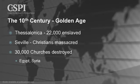We're still in the Golden Age — the 10th century. In Thessalonica, 22,000 Greeks are enslaved. In Seville, Spain, the Christians are massacred. And then 30,000 churches were destroyed by order of the Caliph in Egypt and Syria.